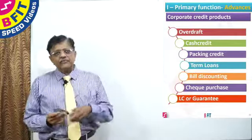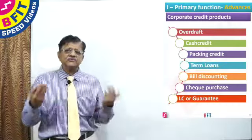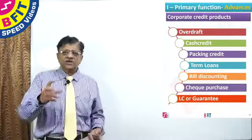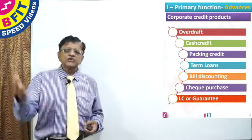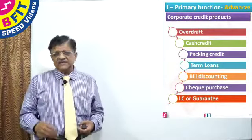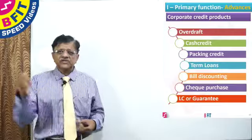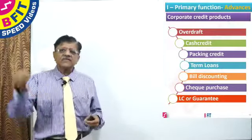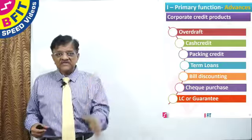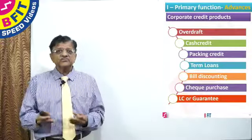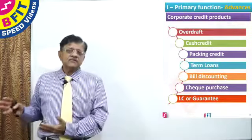Bills discounting: after producing the commodity, the corporate sells goods — for example, a spinning mill produces spun yarn and sells it all over India. Goods are sent through lorry or railways and the railway receipt or lorry receipt, accompanied with a bill of exchange, is given to the bank. The bank will discount or purchase the bills. If it is a usance bill, it will be discounted. If it is a demand payable bill, it will be purchased and the amount credited to the corporate. It is a post-sale finance.